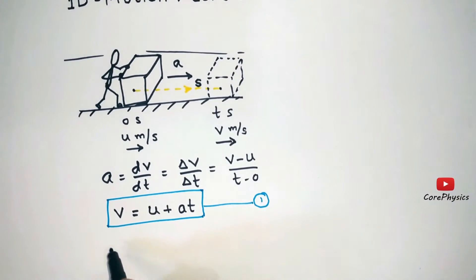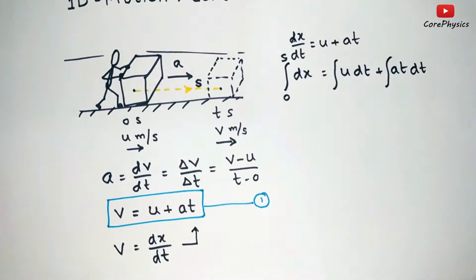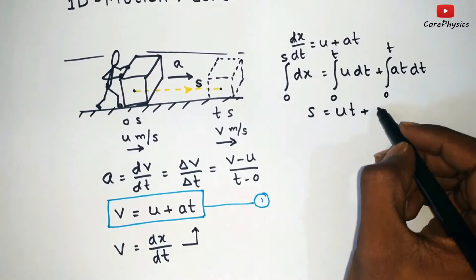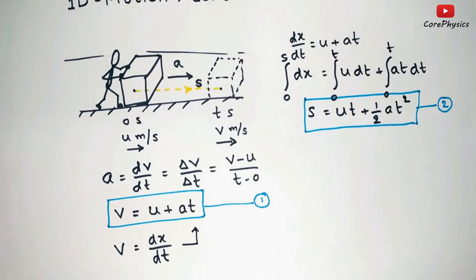And since velocity is given by dx by dt, if we substitute this in equation 1 and on integrating this equation with proper limits we can find displacement in terms of initial velocity, acceleration and t, which is given by s equal to ut plus half at square.